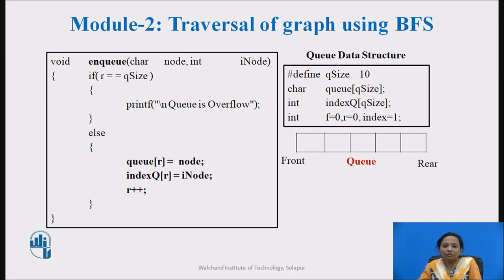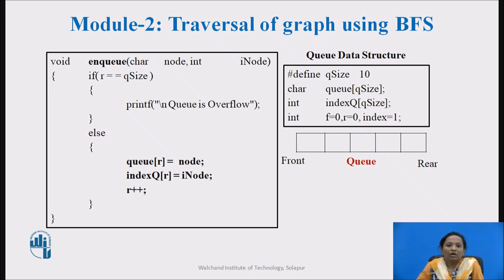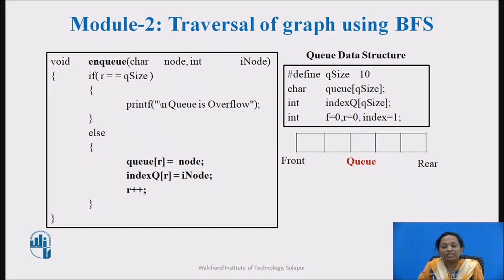Now in Module 2, the given graph will be traversed by following the BFS algorithm. Input to this module is the adjacency matrix representation of the graph, the status array, and the queue data structure. Variable declarations related to the queue data structure include a character array queue with size 10, and one more queue called index queue, which is an integer array with size 10. Queue front and rear are declared and initialized to 0, and one more variable index is declared and initialized to 1.